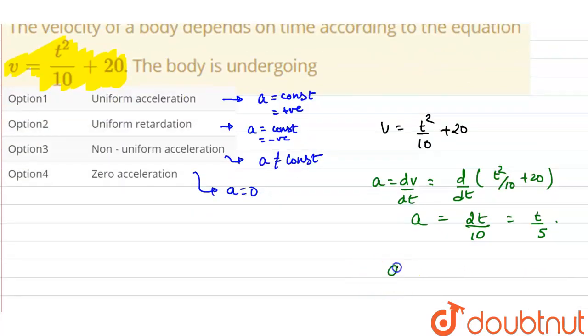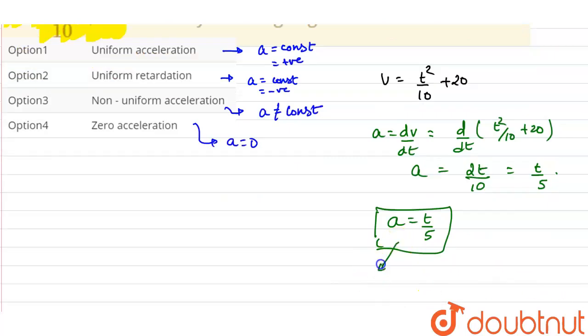Now as we can see that our acceleration is dependent on time. So what we can say that acceleration is positive but variable. As our time cannot be negative, so acceleration will always be positive.